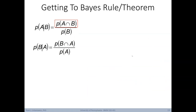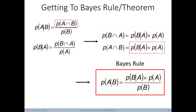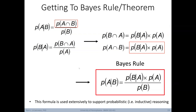Describing conditional probability is a stepping stone to the Bayes rule or theorem, which we're going to use a lot. We have the calculation of the probability of A given B, and the similar equation for probability of B given A. Notably, the joint probability B and A always equals the joint probability A and B — the order doesn't matter. This allows us to substitute and derive the Bayes rule: the probability of A given B equals the probability of B given A, times the probability of A, divided by the probability of B. So now we have a way to describe conditional probabilities without requiring joint probabilities. This formula is used extensively to support probabilistic, or inductive, reasoning.